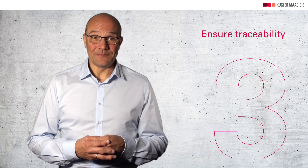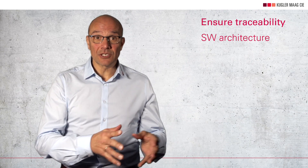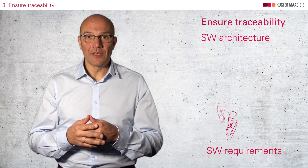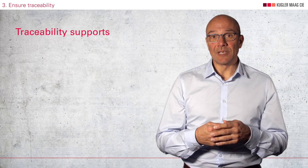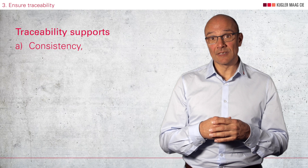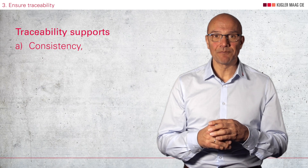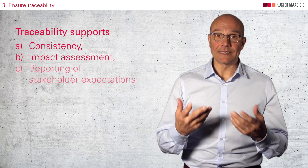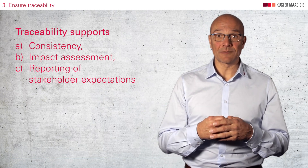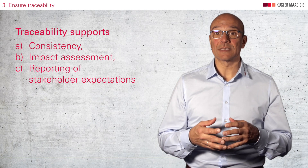Aspect 3: Traceability. This process also requires that you ensure traceability between your software architecture and the software requirements. Normally, there is a tool break between the requirements and the architecture which makes the traceability difficult. The purpose of traceability is that it supports consistency checks — for example, checking the completeness and accuracy of the coverage of the software requirements. It also supports impact assessment in case of change requests or bugs, supports the reporting of stakeholder expectations, and identifies which requirements have been tested, often referred to as coverage reports.